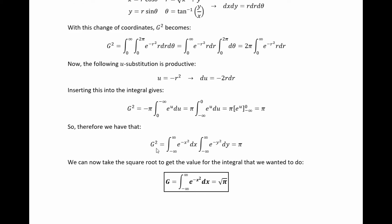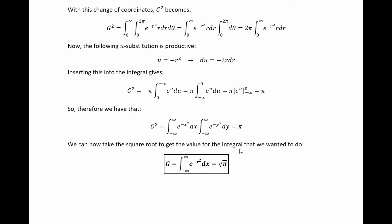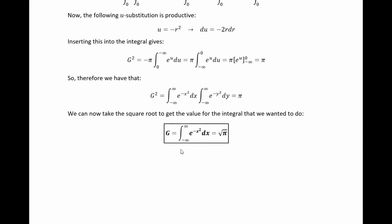So that means the square of the integral that we wanted is equal to pi. But that, of course, tells us that the integral we want is just the square root of pi. And there you go. That's how you do the Gaussian integral.